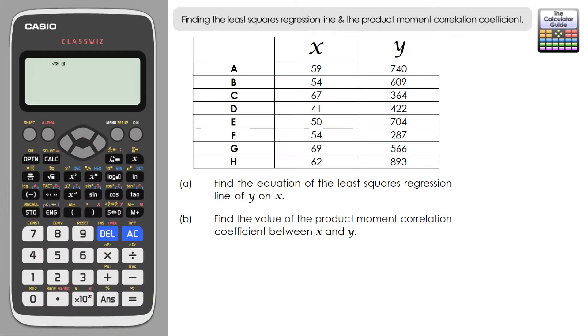So we have a set of paired variables here, X and Y, and eight bits of data ranging from A to H. What we need to do is find the equation of the least squares regression line of Y on X for part A, and then for part B find the value of the product moment correlation coefficient between X and Y.